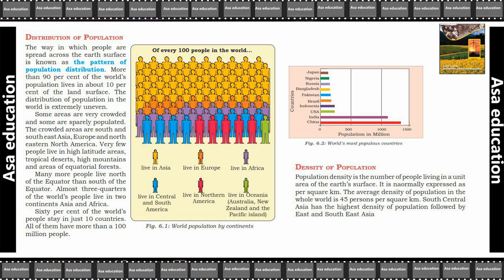The average density of population in the whole world is 45 persons per square kilometer. Agar average nikala hain kisi bhi population ki density ka, toh poori dunya mein lagwag 45 persons per square kilometer lehti hain.